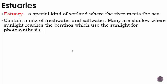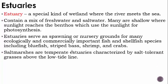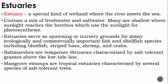Many estuaries are shallow where sunlight reaches the benthos, which use sunlight for photosynthesis. Estuaries serve as spawning or nursery grounds for many ecologically and commercially important fish and shellfish species, including bluefish, striped bass, shrimp, and crabs. Salt marshes are temperate estuaries characterized by salt-tolerant grasses above the low tide line — the grass can tolerate saltwater and will not die. Mangrove swamps are tropical estuaries characterized by several species of salt-tolerant trees. So, salt marshes have salt-tolerant grass, and mangrove swamps have salt-tolerant trees.